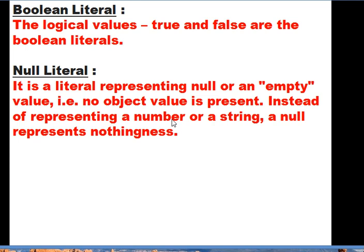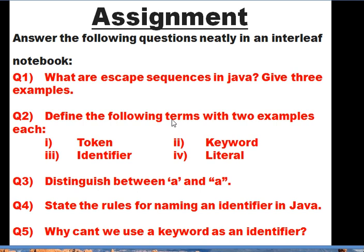This brings us to the end of the module. I hope you have understood all the topics covered. Go through it at least two or three times, and once you are done there is a short assignment. You have to answer the given questions neatly in an interleave notebook — a fair notebook. The topic of the chapter is 'Values and Data Types'. Question one: What are escape sequences in Java? Give three examples.